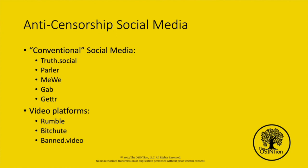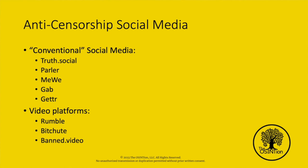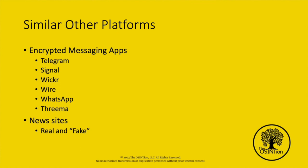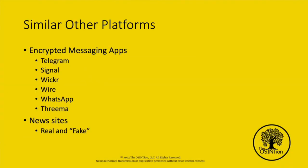What about some other platforms? We have the conventional social media platforms that are kind of anti-censorship — Truth Social, Parler, MeWe, Gab, Getter. Then you have video platforms subscribing to that same ideology: Rumble, Bitchute, and ban.video, which is an Alex Jones thing — I highly recommend buying some tinfoil before you browse that website. You've also got encrypted messaging apps like Telegram, Signal, Wickr, Wire, and WhatsApp — though I don't trust WhatsApp because it's owned by Facebook. If there's a way Mark Zuckerberg can subvert an algorithm to get more data to sell to advertisers, they're going to do it. And then there's Threema.